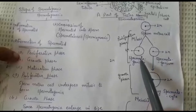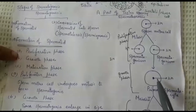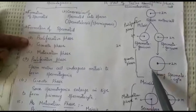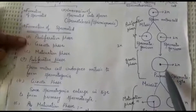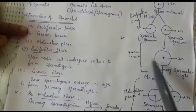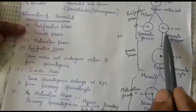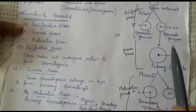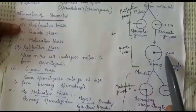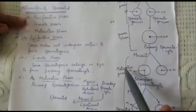Spermatogonia are continuously produced, but some keep dividing while others enter the growth phase. In the growth phase, spermatogonia enlarge in size by storing more cytoplasm and undergoing DNA duplication, attaining almost double their original size. This fully grown spermatogonium is known as a primary spermatocyte, and its chromosome number is still diploid.